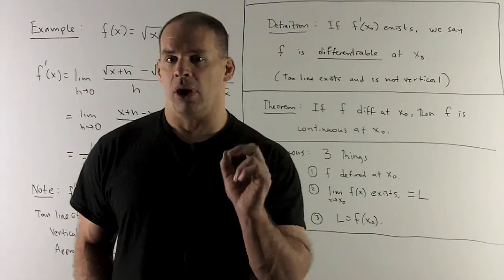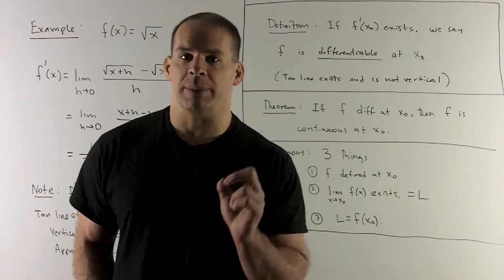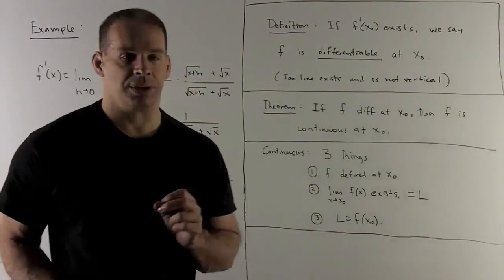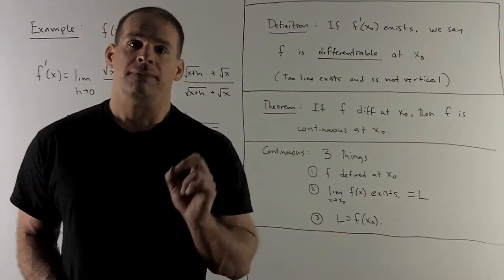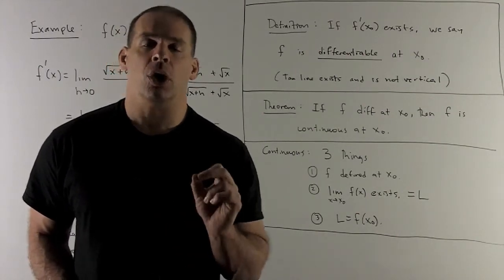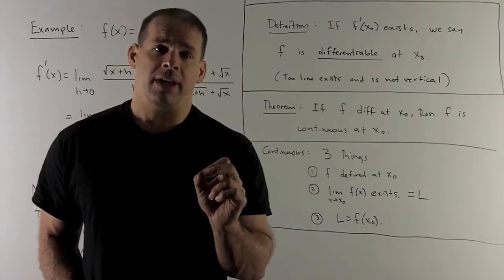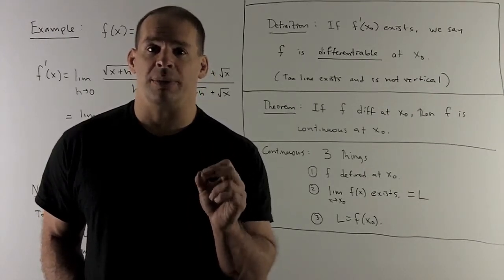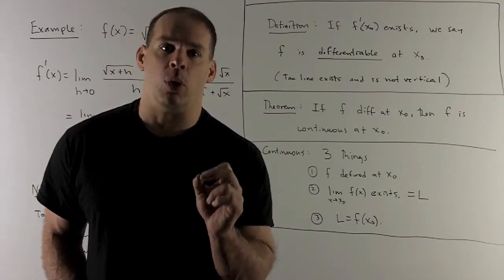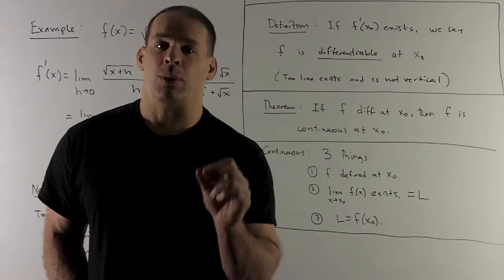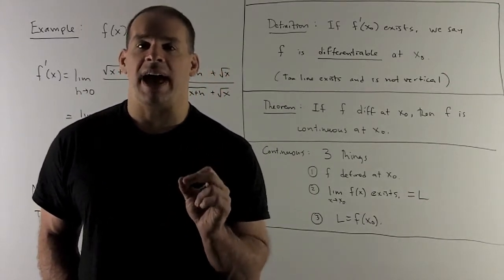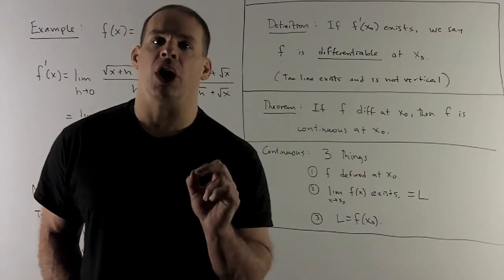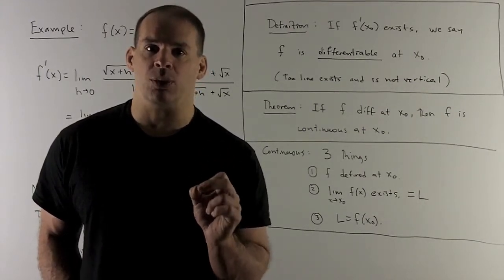Theorem: if f is differentiable at x₀, then f is continuous at x₀. Let's recall what we need for continuity — three things. First, the function has to be defined at x₀. Note that if I'm talking about the derivative of f at x₀, it must be defined there because it's part of the definition of the secant line — we base all the secant lines off the point (x₀, f(x₀)). Next, we want the limit as x goes to x₀ of f(x) to exist, and then once I have that limit, I need to show it equals the value at the point.